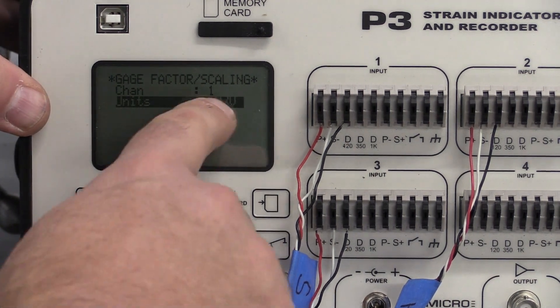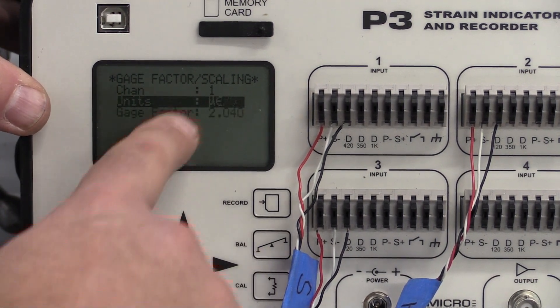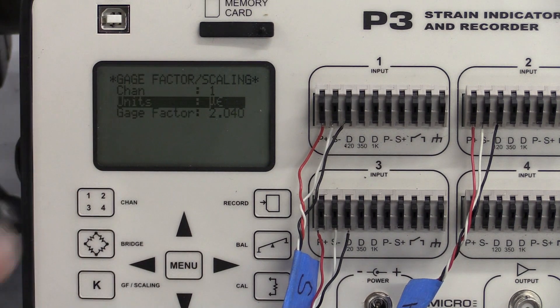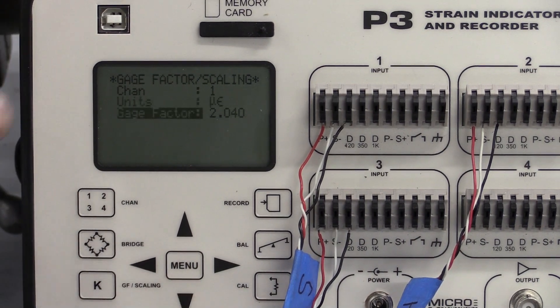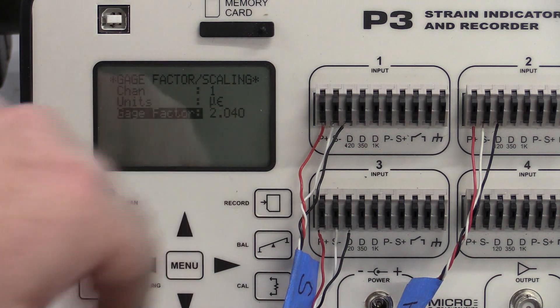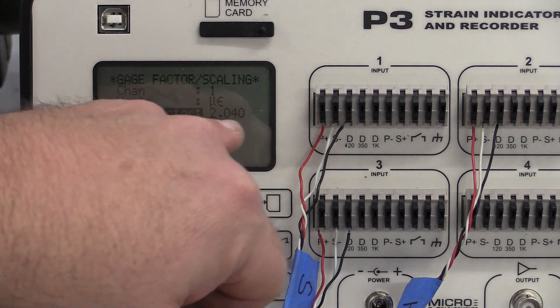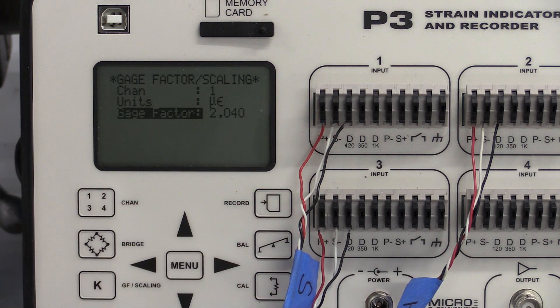I'm going to look at the units and I want to be on micro strain. If I change that you're going to see my menus change. I want to go till I get to micro strain and that's good. I want to cursor down to gauge factor and gauge factor is what the gauge manufacturer tells us this is going to be for this gauge and for the gauges that we have installed here they're going to measure 2.04 so we need to have that number typed in for all three strain gauges here that came out of the same packet.